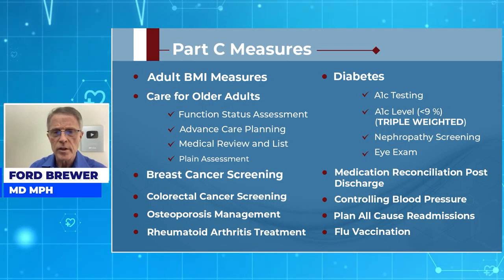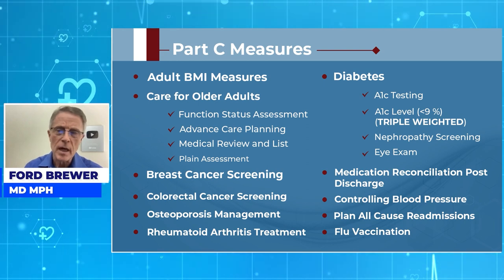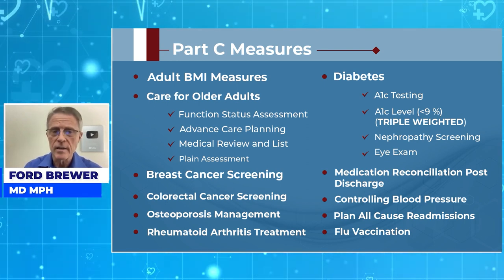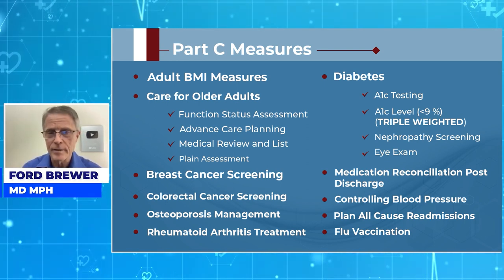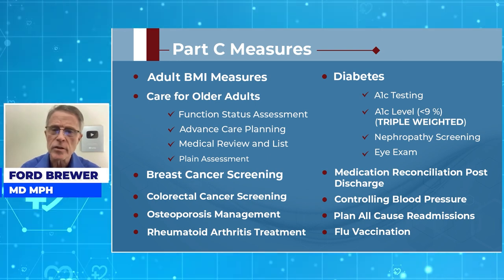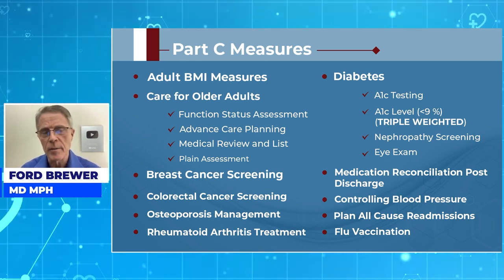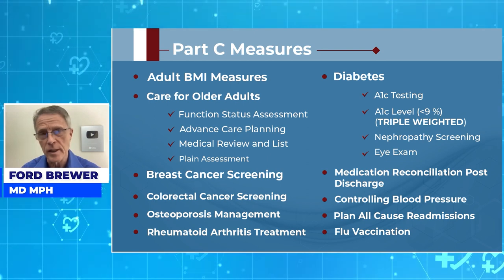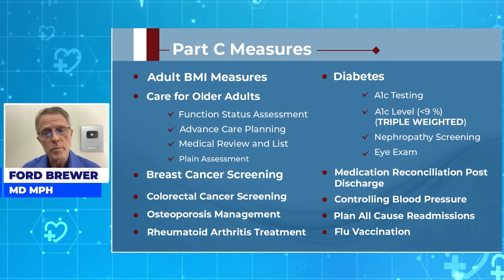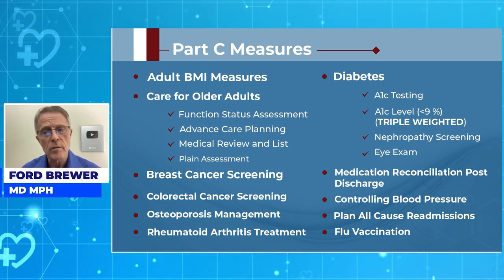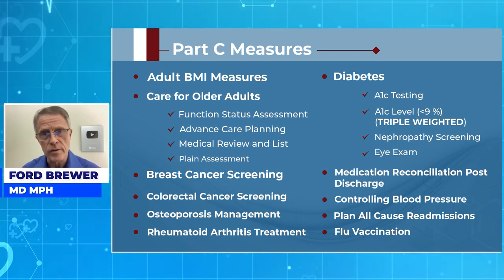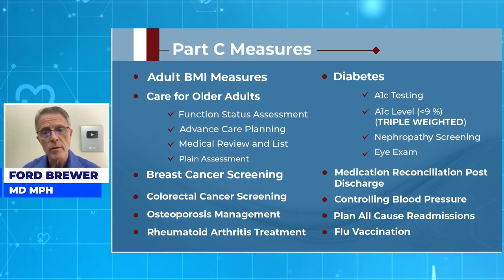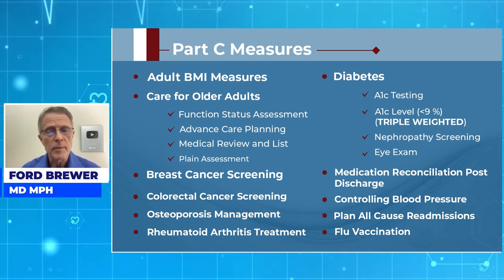Here are the Part C measures: Adult BMI Management; Care for Older Adults, or COA, which includes Functional Status Assessment, Advanced Care Planning, Medication Review and Lists, and Pain Assessment. Others include Breast Cancer Screening, Colorectal Cancer Screening, Osteoporosis Management, and Rheumatoid Arthritis Treatment and Screening.